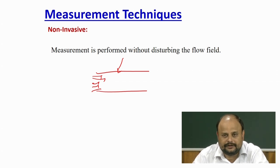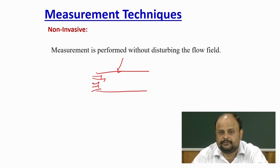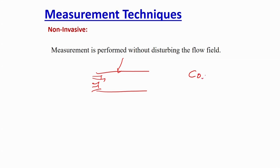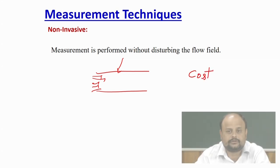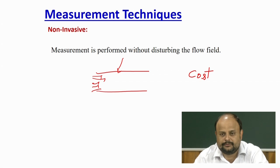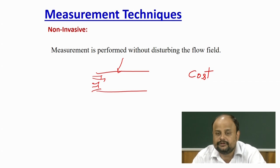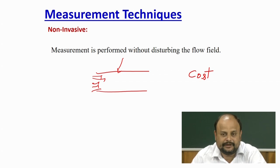You are not intruding anything inside the system, and that is why these things are called non-invasive. The advantage is you are not disturbing the flow fields, so whatever measurement you get is very accurate — you are not changing the flow field during measurements. But the major disadvantage of this technique is the cost. A thermocouple you get for 2,000–3,000 rupees, but a thermal imaging camera will cost you several lakhs of rupees.